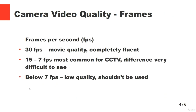Another part of quality is frames per second. At 30 frames per second it's movie quality — completely fluent, like watching TV. For CCTV it's enough to use somewhere around 15 to 7 frames per second, which is still pretty fluent, and the difference between 15 and 7 is difficult to notice. Going below seven frames per second is low quality and shouldn't really be used.